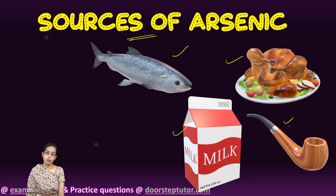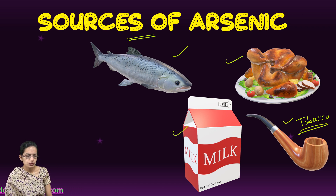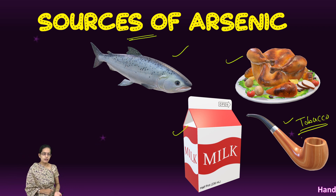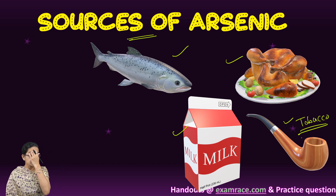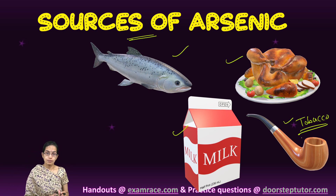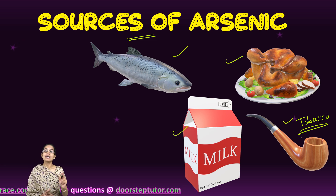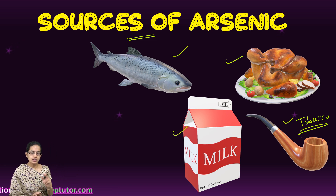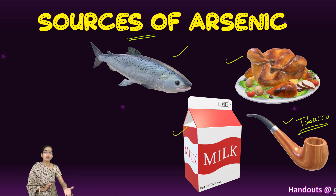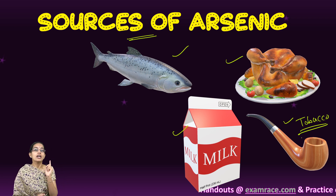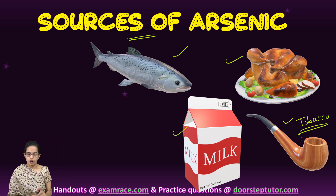Tobacco is a very important source to understand, because people who smoke tobacco are exposed to inorganic arsenic. Inorganic arsenic is not bound to carbon, making it highly toxic compared to organic arsenic. The tobacco plant has a unique property to absorb arsenic from the soil, and therefore very high concentrations of arsenic are found in tobacco.